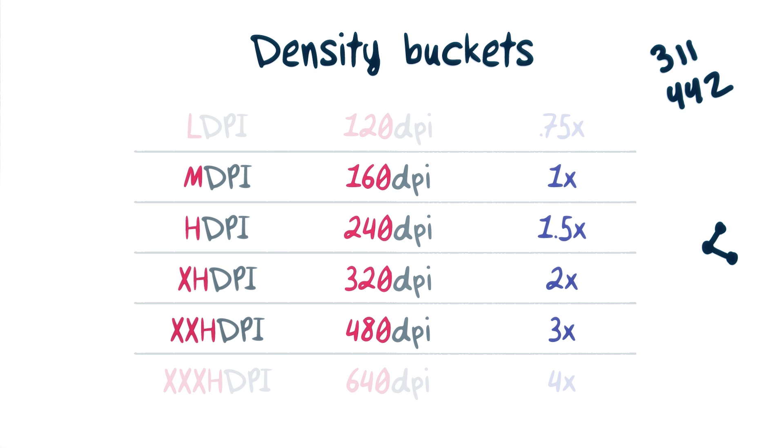They essentially make your UI elements almost exactly the same physical size, like really, really close, while letting you only produce assets for a handful of densities, like these four.